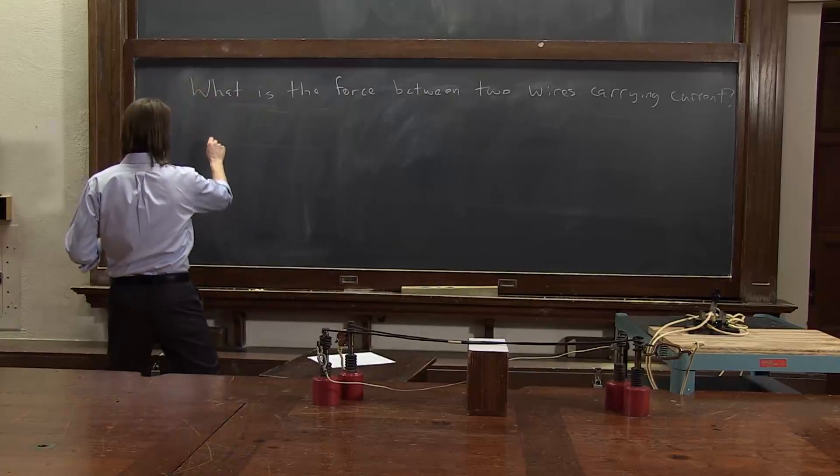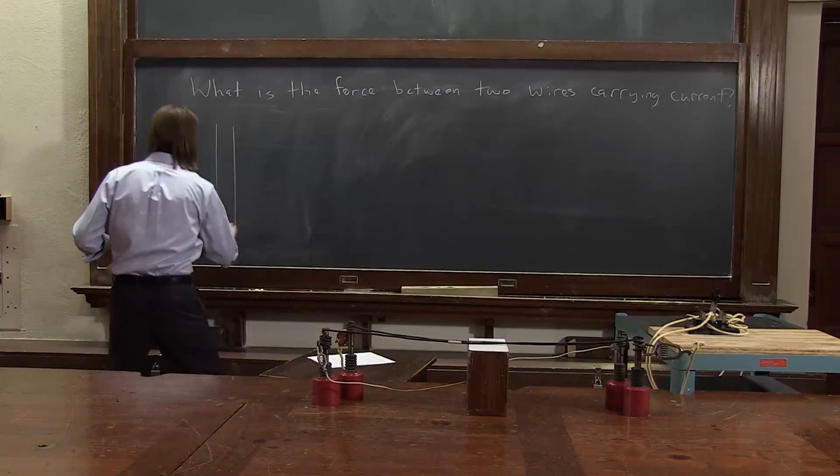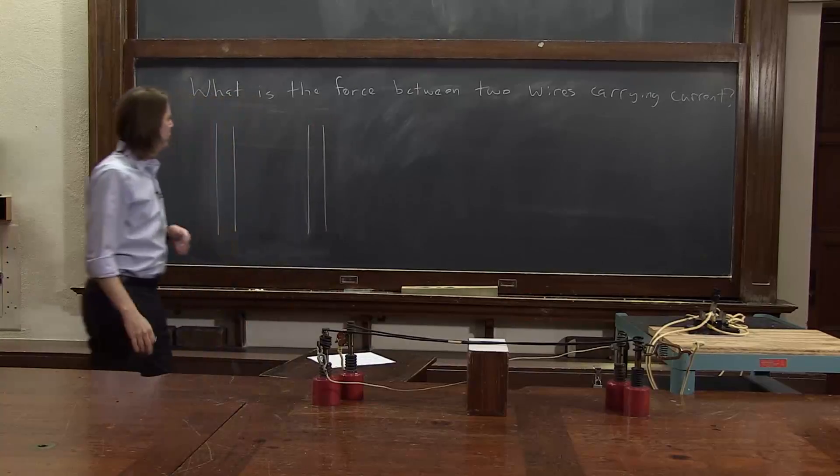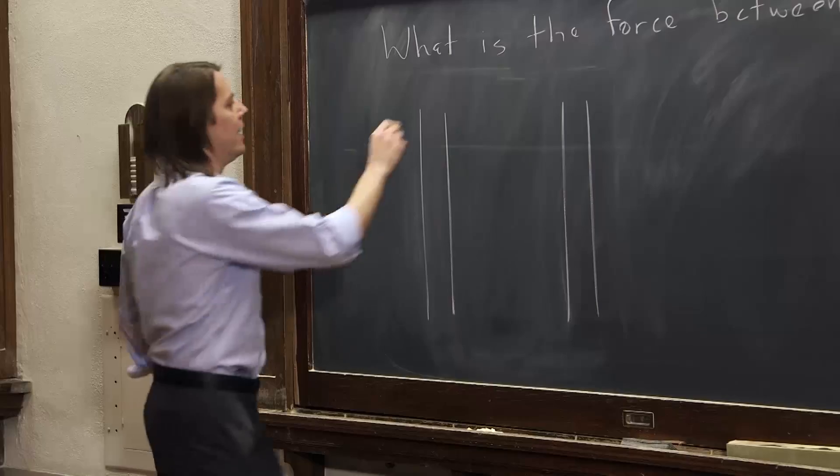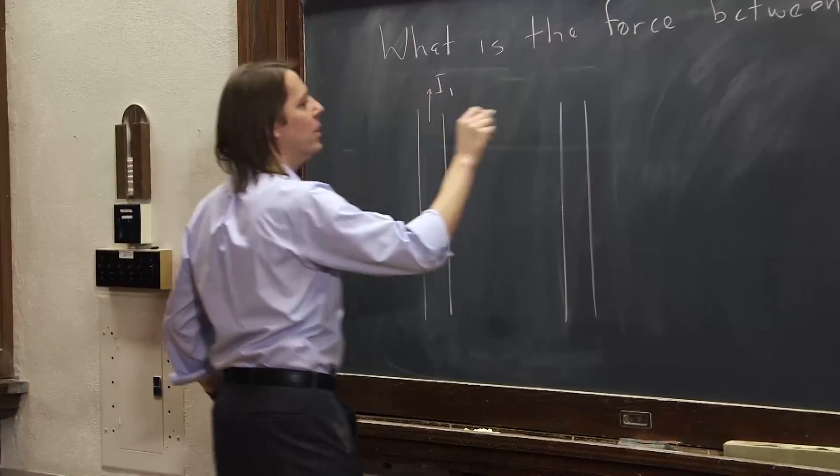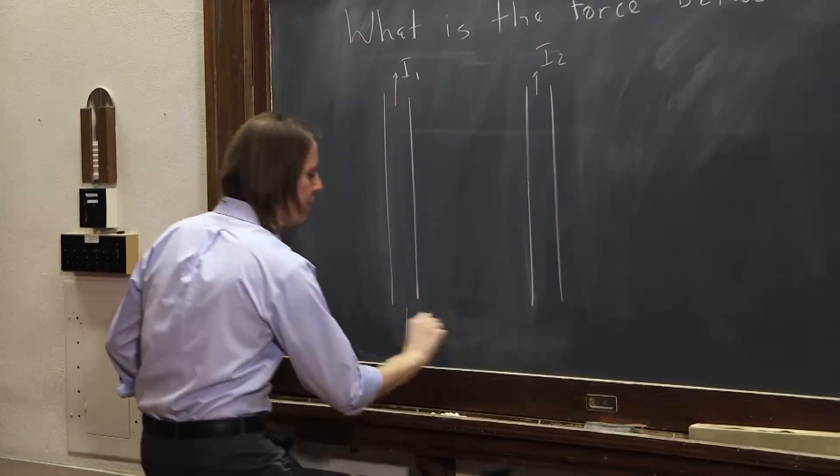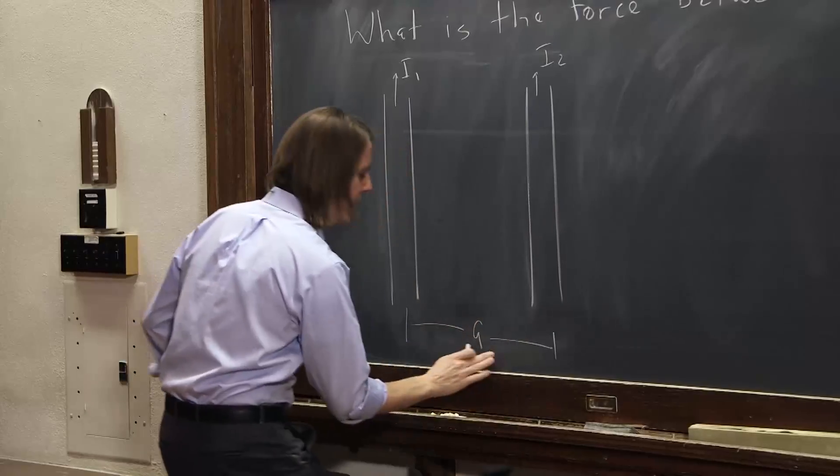So let's first draw our two wires here. One wire there, one wire there. And we're going to do the problem as though they're infinitely long. One carries a current I1 and one carries a current I2, and they're separated by a distance a.